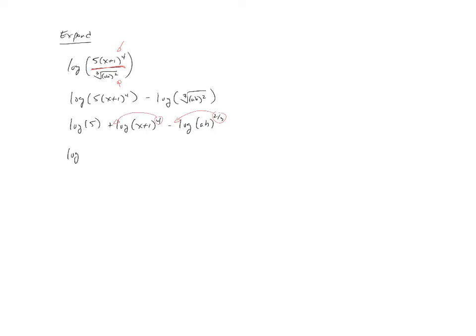So so far we're at log five plus four log of X plus one minus two-thirds log of A times B. And I'm just about finished.